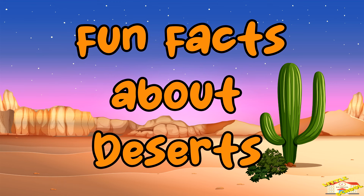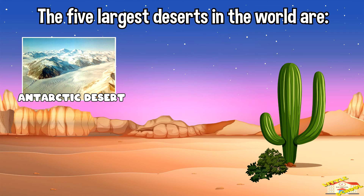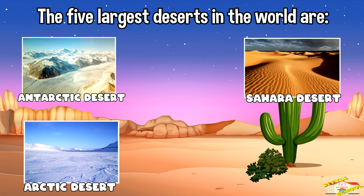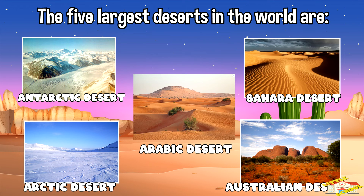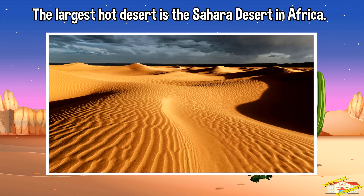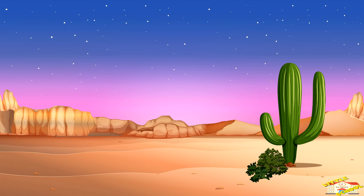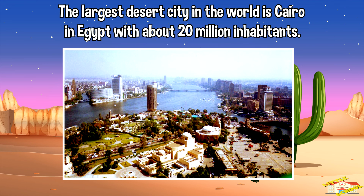Now here are fun facts about deserts. The five largest deserts in the world are the Antarctic Desert, the Arctic Desert, the Sahara Desert, the Australian Desert, and the Arabian Desert. The largest cold desert is the Gobi Desert in Asia. The largest hot desert is the Sahara Desert in Africa. Desert areas receive less than 50 centimeters or 20 inches of rain per year, while rainforests receive at least 200 centimeters or 80 inches of rain per year. The largest desert city in the world is Cairo in Egypt, with about 20 million inhabitants.